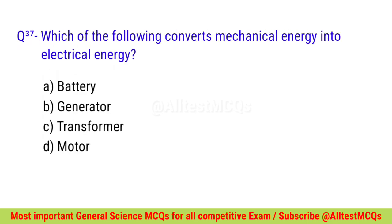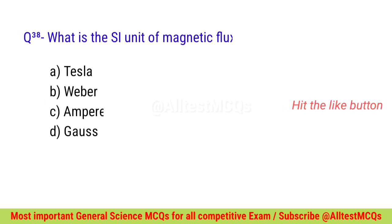Question number thirty-seven: Which of the following converts mechanical energy into electrical energy? Correct option is B — Generator. Question number thirty-eight: What is the SI unit of magnetic flux? Right option is B — Weber.